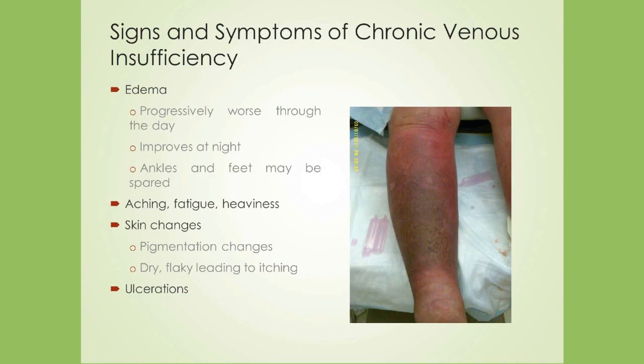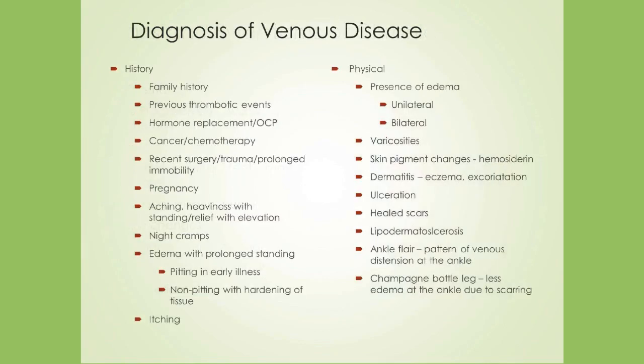Sometimes venous ulcers are called stasis ulcers or venous stasis ulcers. The typical venous ulcer occurs on the lower leg, usually near the ankle where vein pressures are highest, and is surrounded by skin with a rusty brown color. Diagnosis of venous disease begins with a comprehensive history and physical. Family history of venous disease or thrombotic events, previous thrombosis, current hormone replacement or contraceptives, cancer and/or current chemotherapy, recent surgery, trauma, or immobility are risk factors for DVT.